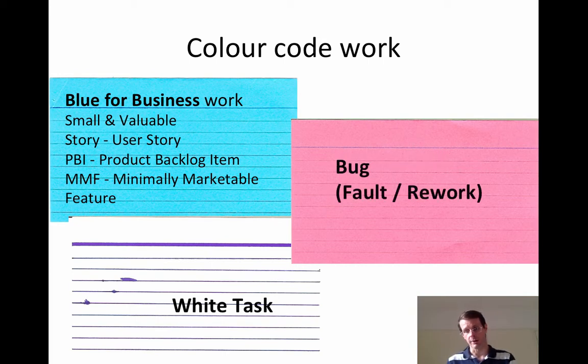I use red cards for bugs, faults, rework, things that really shouldn't be there. Things we don't want to be there but are there. Things we need to deal with. Things we want to work towards not having. In my ideal world, all our work is blues and whites. We don't have any red work. Unfortunately, reality doesn't often work out like that, so we accept there is some red work. When we color code our work, we can understand it. We can see, the colors can speak to us.